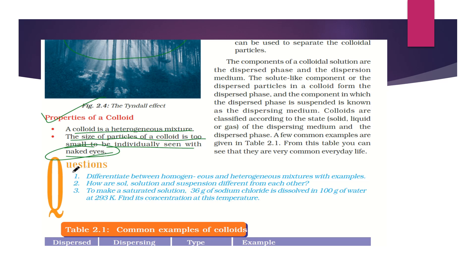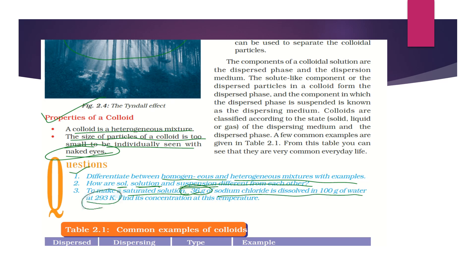Now let's go through a few questions. Differentiate between homogeneous and heterogeneous mixtures with examples. How are solution and suspension different from each other? To make a saturated solution, 36 grams of sodium chloride is dissolved in 100 grams of water at 293 Kelvin. Find the concentration at this temperature. Use the three formulas discussed in the previous episode to find the concentration — please do go through them and write the answers.